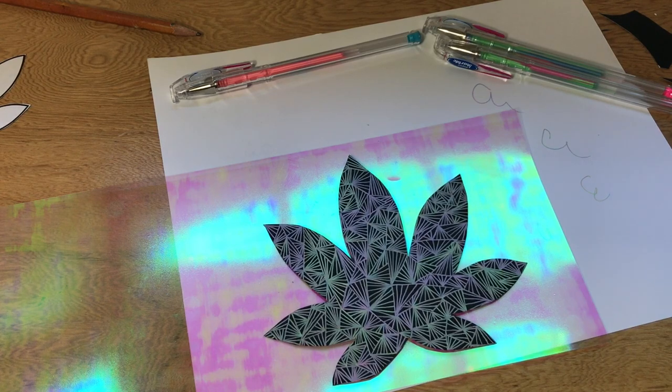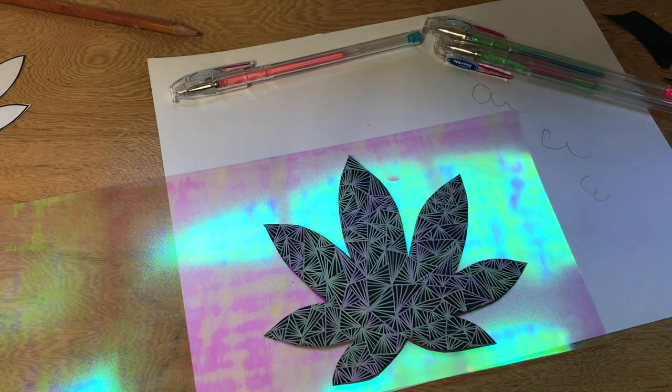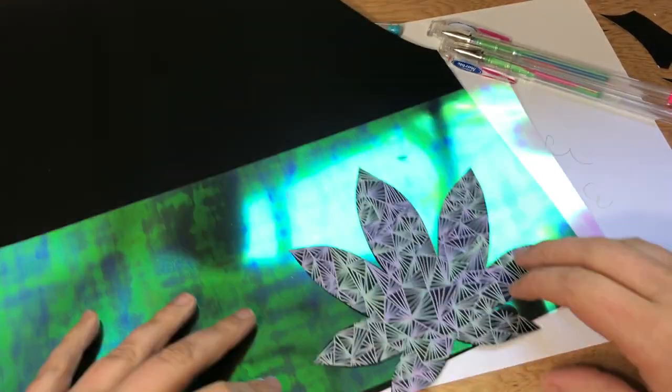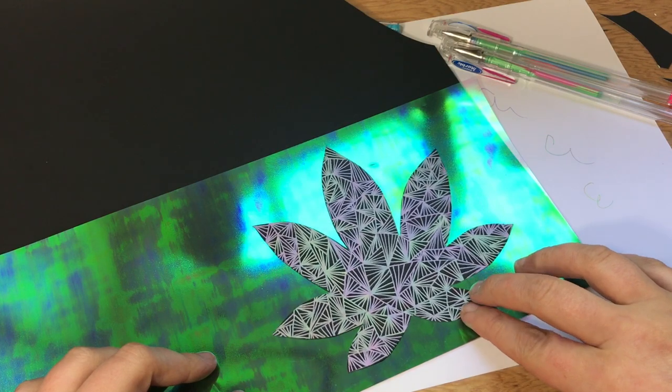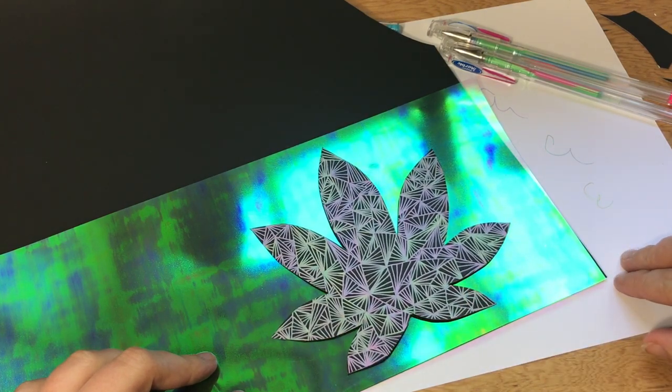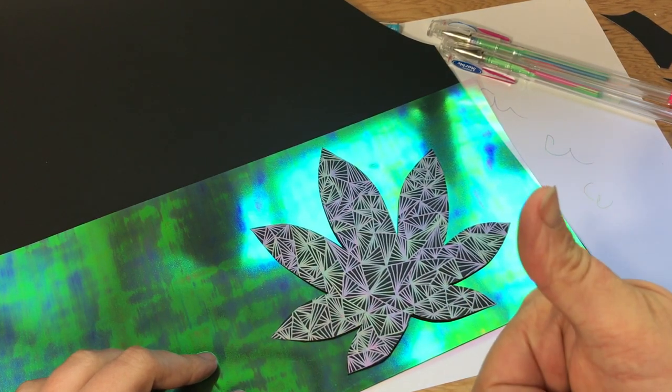You can use normal scrapbooking paper too. There's tons of different designs out there and you can find one that perfectly complements your drawing that is on your leaf. I'm really digging this look, so it's time to cut my paper to size so that it will fit inside of my frame.